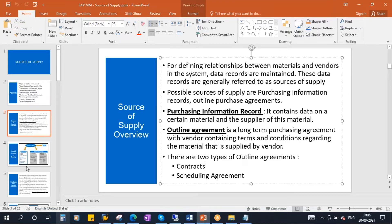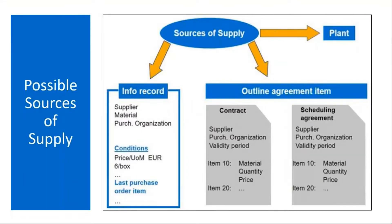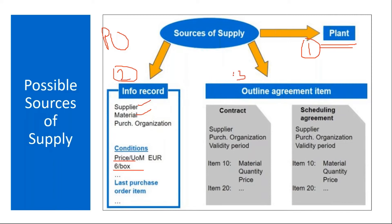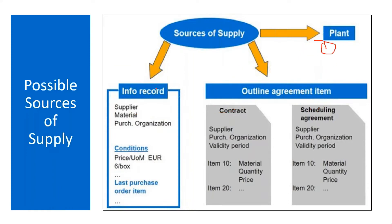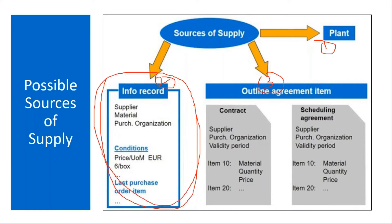Today we will be covering the purchase info record. So the possible sources of supply — whenever you create a purchase order, the system will try to look for data from three places: one is plant information, then it will look for information maintained for supplier and material combination in the info record, and it will also search for information from outline agreements such as contracts and scheduling agreements. Today we are covering the info record portion.